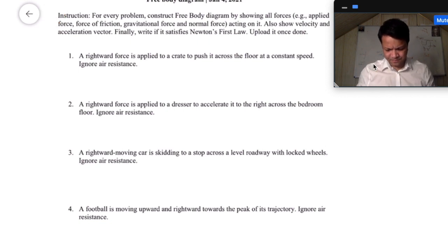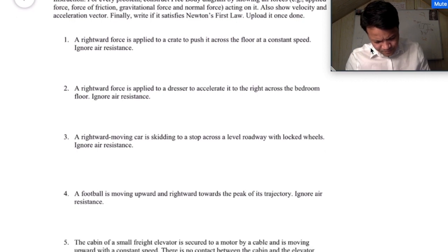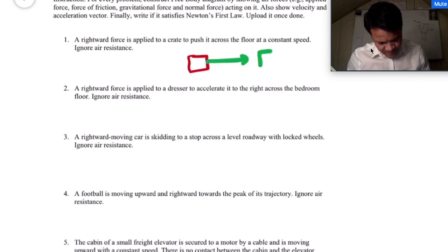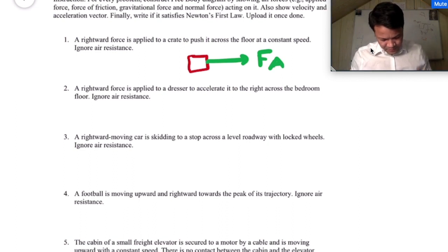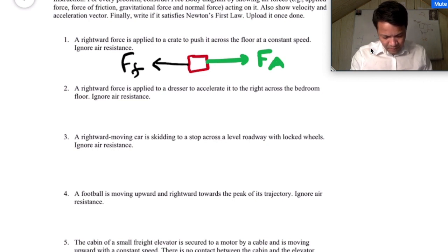So let's get started. First scenario: a rightward force is applied to a box to push it across the floor. So there is an applied force to push it across the floor. With a constant speed — speed is constant means the acceleration is zero.